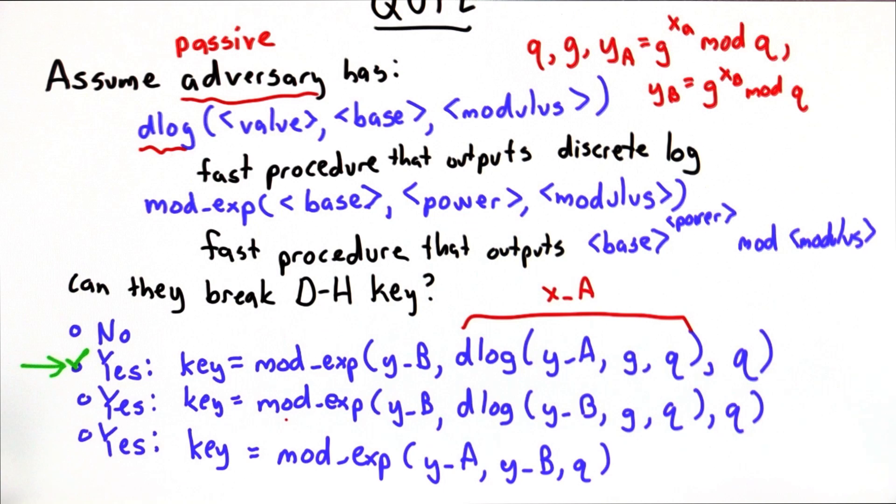The second answer doesn't compute the right thing. It's computing the discrete log of y_b, which would be the y_a value. That's not the value that is necessary to compute the key.